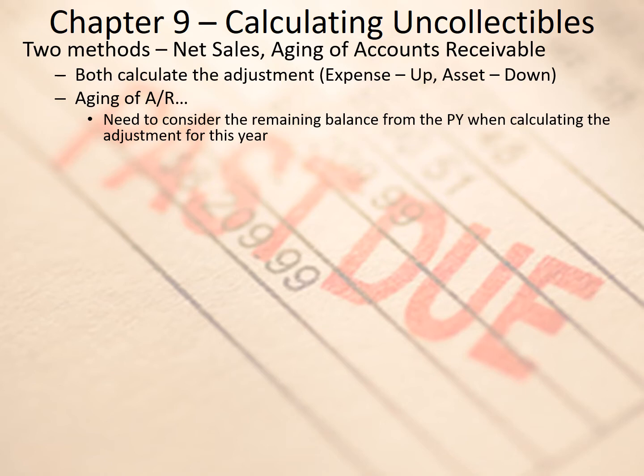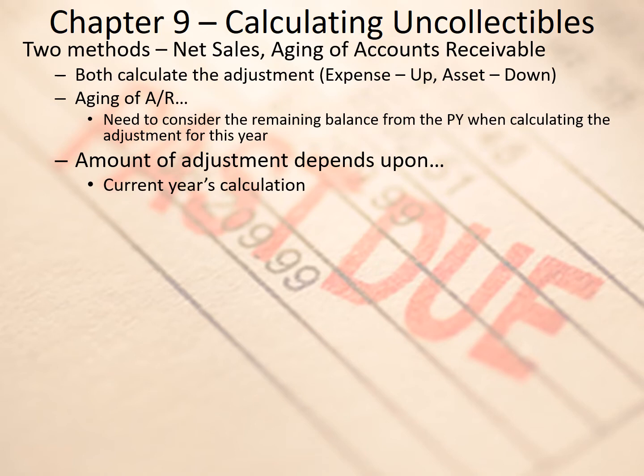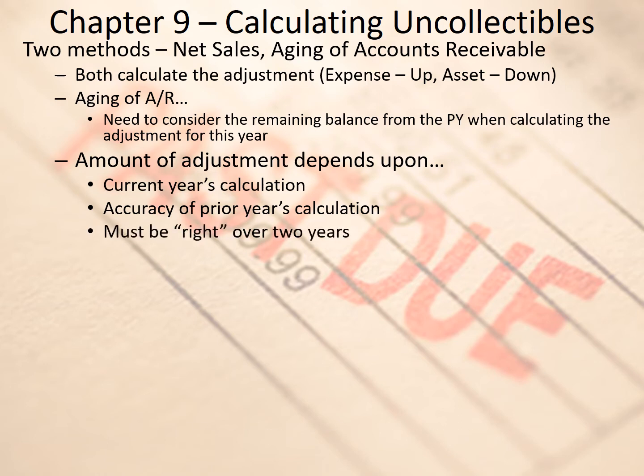That does make the aging method a little more challenging. I have another video that goes over an example using the aging of accounts receivable. The amount of the adjustment will depend on the current year's calculation and the accuracy of the prior year's calculation. You're never perfectly correct on this estimate — you're always going to be a little bit off, and that's okay. As long as you're close, you're good, because over the course of two years you must be right.